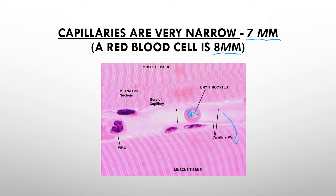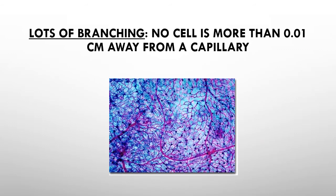Nutrients come out of those blood vessels, and waste products go into them from the muscles — things like CO2, oxygen, and perhaps lactic acid if it's building up inside the cell. Glucose comes in for the muscle cells to work the way they should. Those capillaries are widely, widely branched — so there is a huge amount of branching to the point where any given cell is no more than a hundredth of a centimeter away from a capillary.